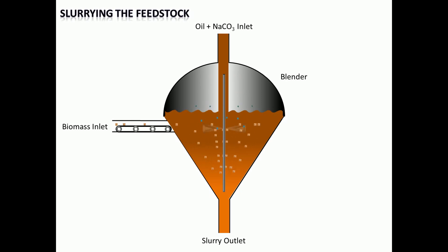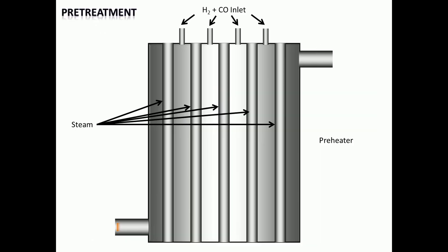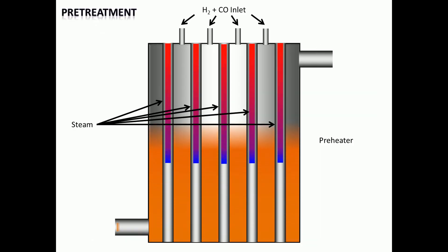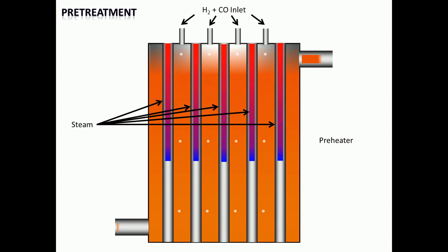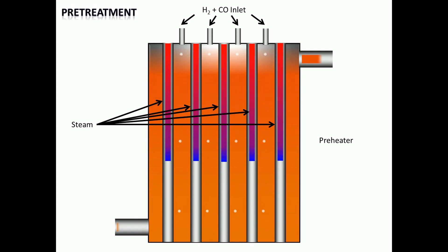One of the commonly used catalysts is a 20% sodium carbonate solution. The resulting slurry is sent to a preheater by a high-pressure slurry pump. In this step, the process gas containing hydrogen and carbon monoxide is compressed into the preheater, and the slurry is heated to 330 degrees Celsius to achieve the reaction temperature.